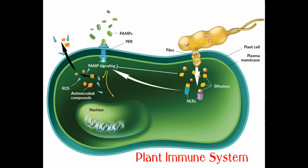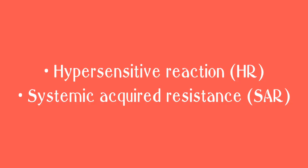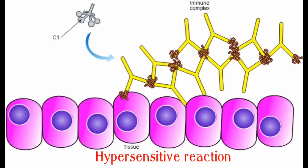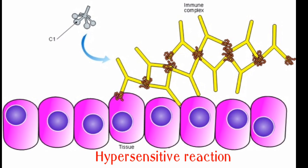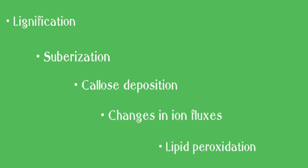Under this situation, plants activate a complex network of signaling pathways that lead to the hypersensitive reaction or systemic acquired resistance. Hypersensitive reaction activation involves metabolism alterations such as lignification, suburization, callous deposition, changes in ion fluxes and lipid peroxidation.